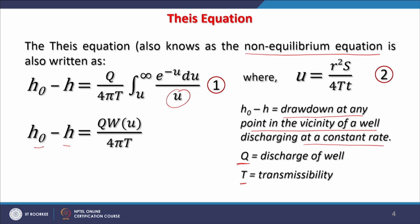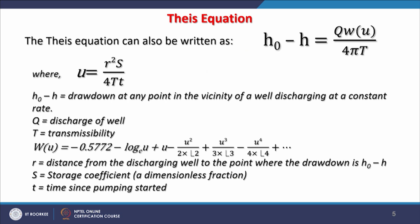We also have another equation in a more brief manner: h₀-h = Qw(u)/(4πT). In this way the equation can be written, where u stands for r²S/(4Tt).